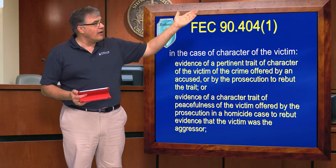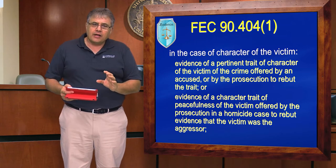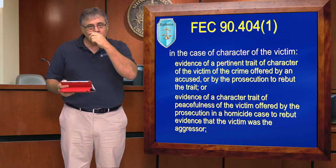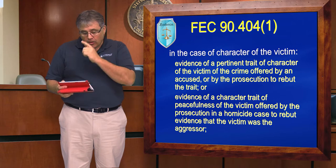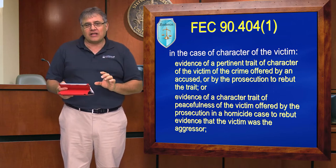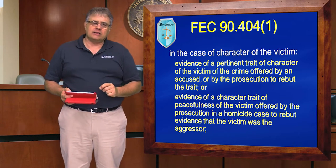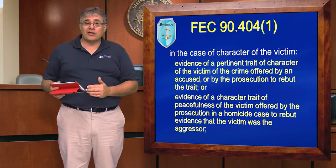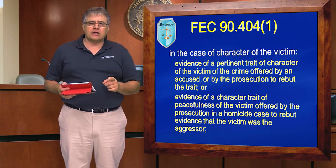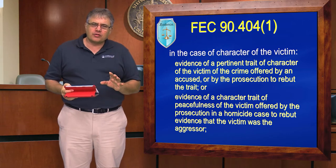Here is Florida Evidentiary Code 90.4041 laid out. To review: you can put in evidence of the pertinent character trait of the victim—it can be offered by the accused or by the prosecution to rebut—or it can be evidence of a character trait for peacefulness of the victim if we're in a homicide case prosecution and factual evidence has been presented to suggest that the victim was the aggressor. In that set of circumstances, we can potentially offer character evidence without the door having otherwise been opened.